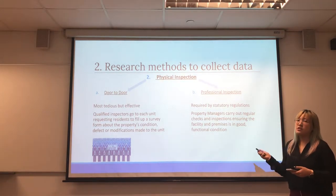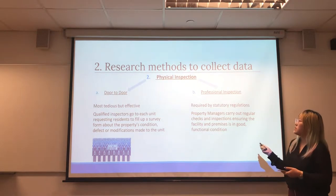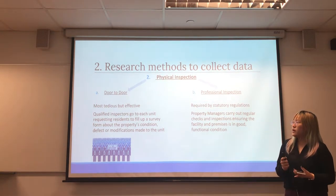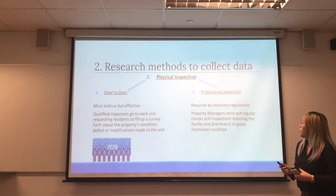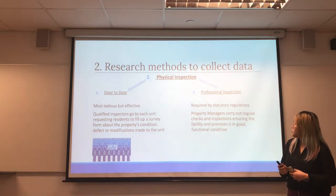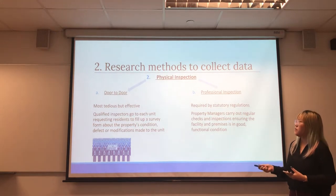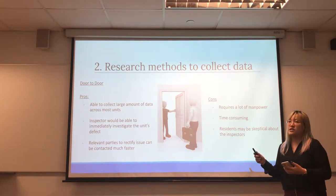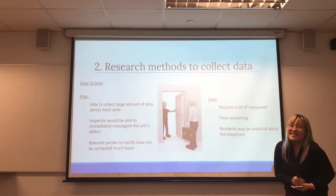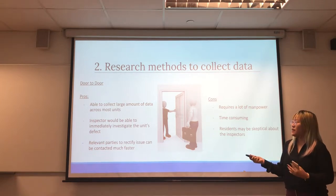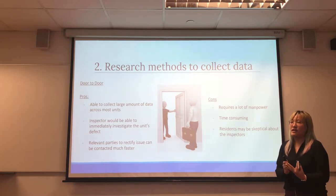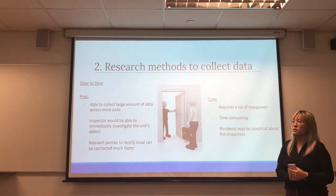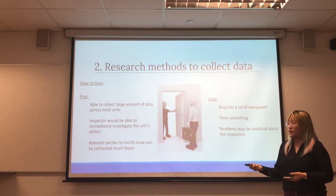The next method is physical inspections, split into two parts: door-to-door and professional inspection. For door-to-door, surveyors go from each unit's door and ask residents to fill in surveys — a tedious but effective method. For professional inspection, this is required by statutory regulations and property managers must carry out regular inspections of the premises. The advantage of door-to-door is that surveyors can inspect defects on the spot, identify the severity, and determine whether the defect was due to poor usage or poor workmanship. If due to poor workmanship, the liability falls on management and the inspector will follow up by contacting the relevant contractors.